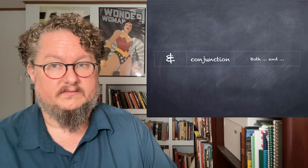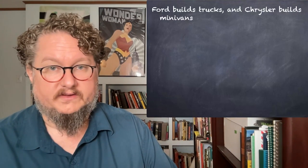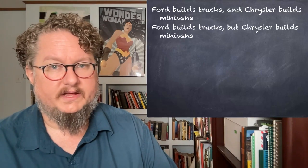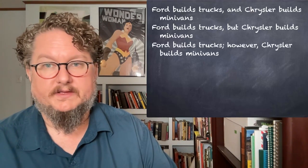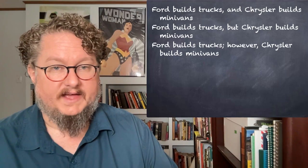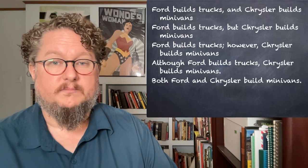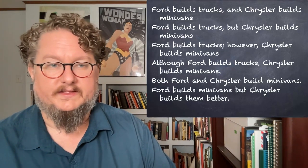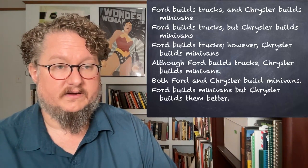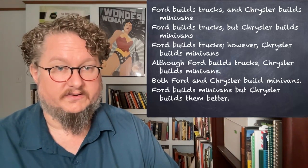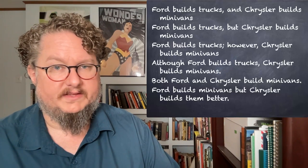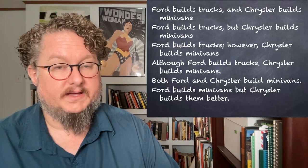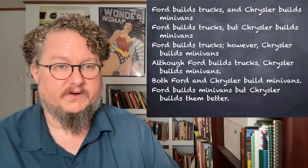Conjunction is represented with an ampersand and means 'and' or 'both and.' Here are sentences we translate using conjunction: 'Ford builds trucks and Chrysler builds minivans'; 'Ford builds trucks, but Chrysler builds minivans'; 'Ford builds trucks. However, Chrysler builds minivans'; 'Although Ford builds trucks, Chrysler builds minivans'; 'Both Ford and Chrysler build minivans'; 'Ford builds minivans, but Chrysler builds them better.' Whether you use 'and,' 'but,' or 'however,' it's captured by conjunction. The contrastive nuance is structure that SL leaves out.